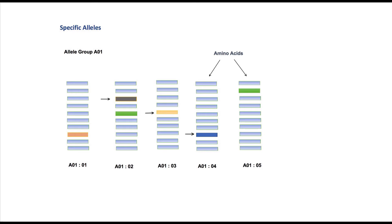For example, five different alleles of allele group A1 all have some difference in amino acids, but their overall pattern is similar. These differences in amino acids result in polymorphism in HLA molecules, and the peptide binding site of HLA molecules is the most polymorphic part.